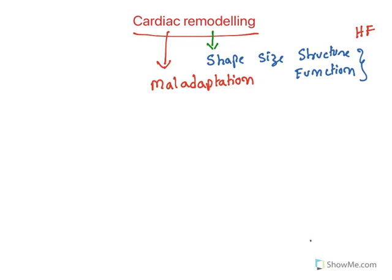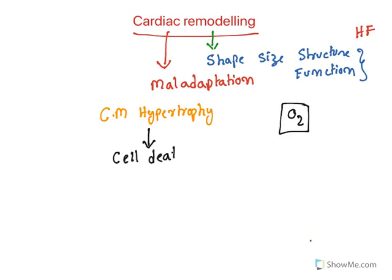What happens in cardiac remodeling? This cardiac remodeling majorly results in cardiac muscle hypertrophy. As I explained in the previous class, this is a pathological hypertrophy. In this hypertrophy, the capillary-to-myocyte ratio is reduced, meaning oxygen supply to the muscle cell is reduced. If oxygen supply is reduced, it results in cell death — by necrosis or apoptosis. The dead cells in cardiac muscle are replaced by connective fibrotic tissue, a process known as fibrosis, also called scarring of the heart.